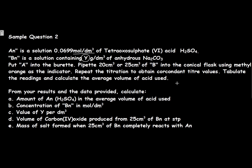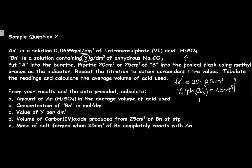From the previous titration, we found the average volume of acid used, VA — that means the average volume of sulfuric acid used — is 20.25 cm³. And the average volume of the pipette, which is the volume of the base, the volume of sodium tetraoxocarbonate IV, which is a basic salt, is 25 cm³. So we already have these two values.